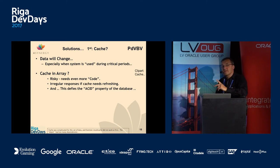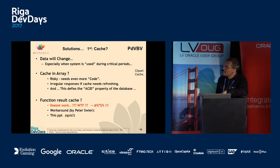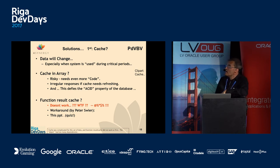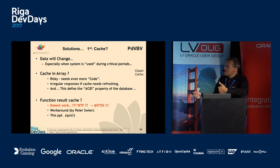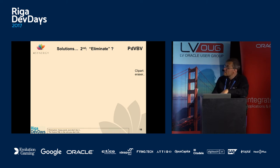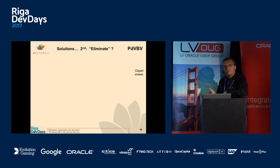Building your own caching mechanism requires more code and more intelligence, and it would defy the ACID properties of the database. So what we tried was the function result cache — and it didn't work. My colleague Peter Sweer said 'I have the perfect use case for function result cache and it doesn't work.' He thought about it for a day, came in one morning and said 'I think I know why.' That's where the quiz comes in — go figure out what N is.